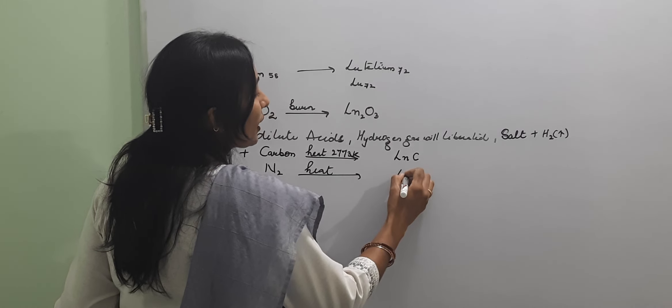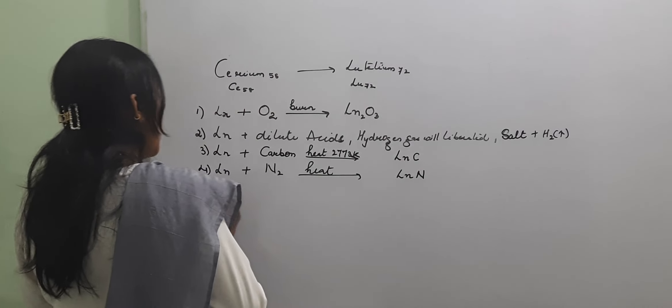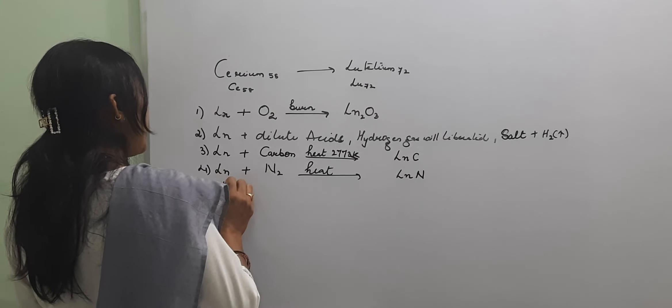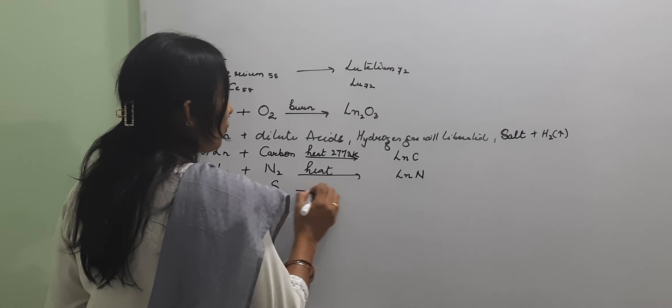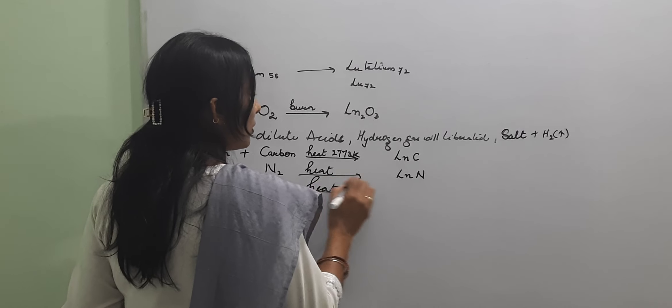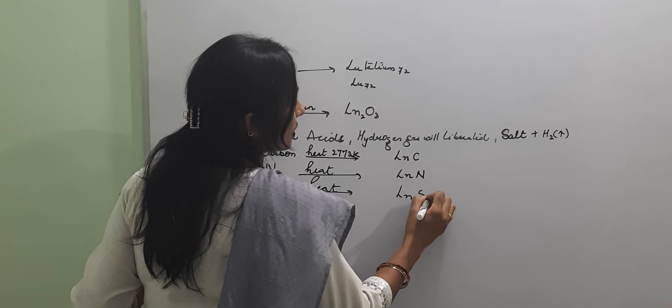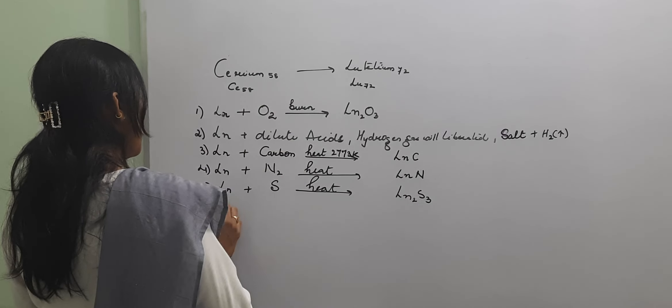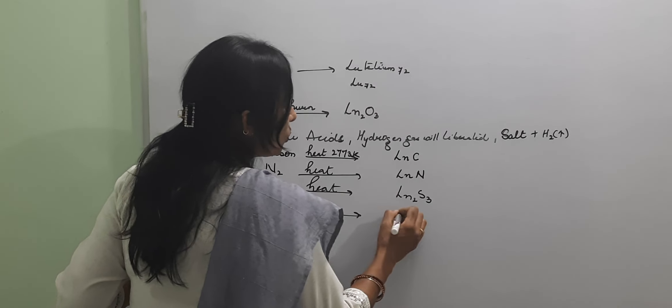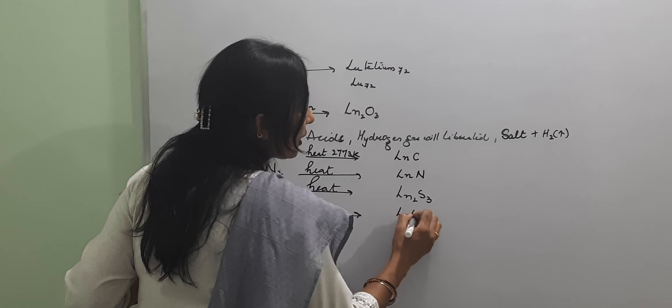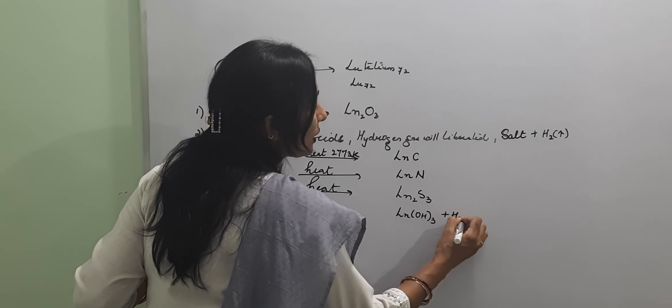We are getting lanthanide nitride. And if we treat lanthanide with sulfur, we are getting lanthanide sulfide. And if we treat lanthanide with water, we are getting lanthanide hydroxide plus hydrogen gas will come out.